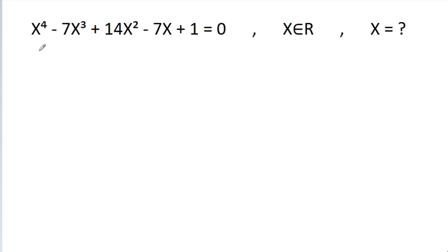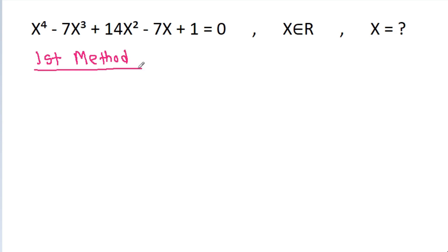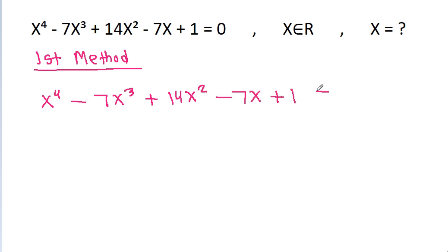In this video, we have given that x⁴ - 7x³ - 14x² - 7x - 1 = 0, where x belongs to real numbers. Then we have to find the value of x. The first method: we have x⁴ - 7x³ - 14x² - 7x - 1 = 0.